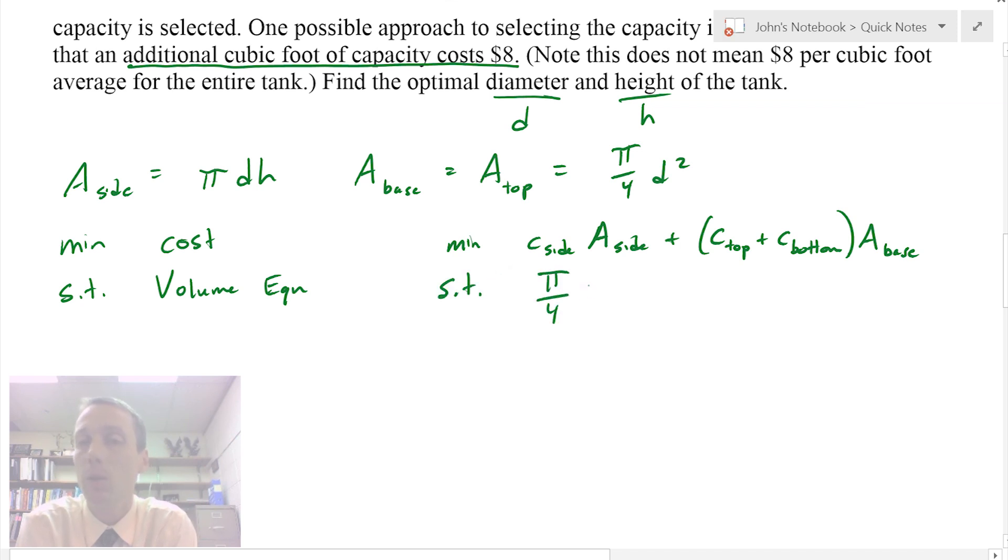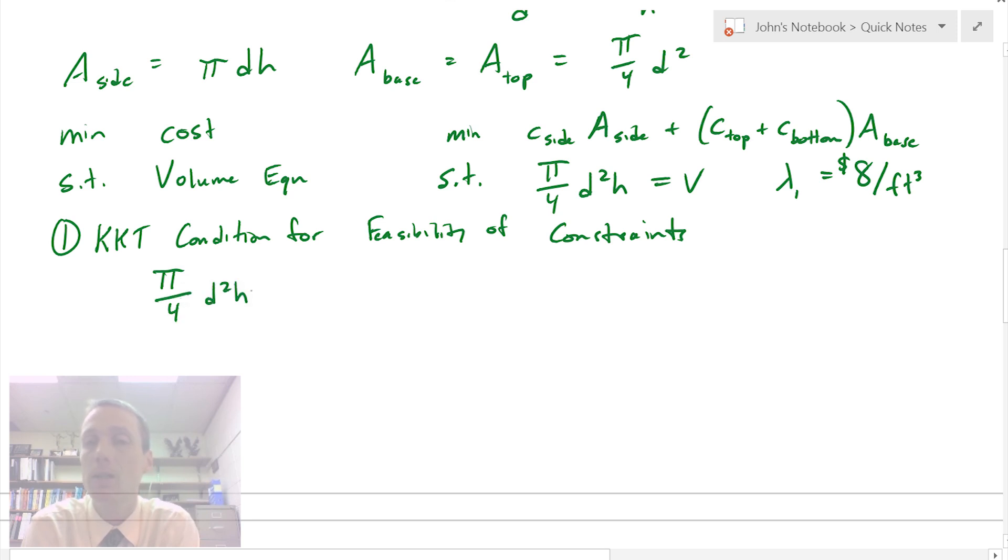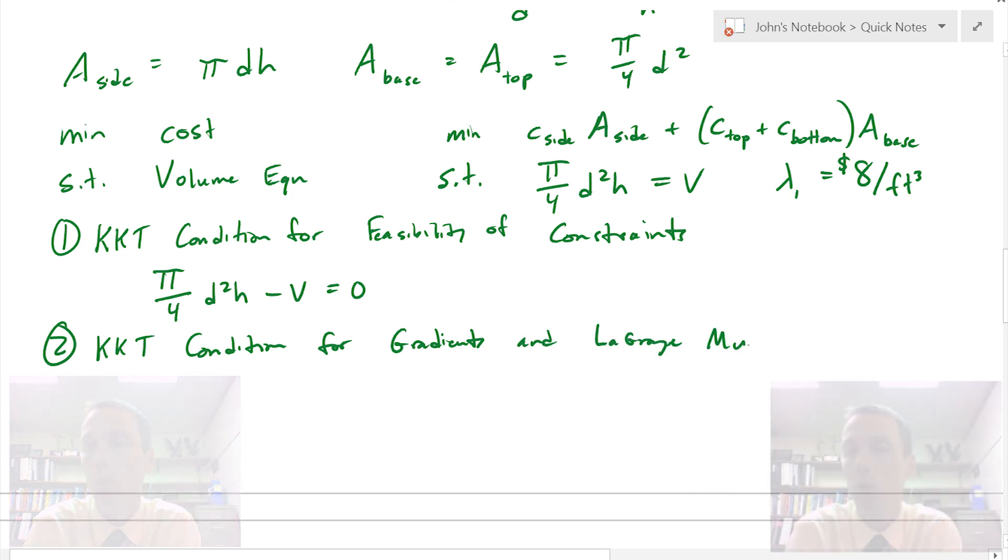Subject to the volume equation: the volume of our tank is pi over 4 times d squared times h. We also have a Lagrange multiplier of $8 per cubic foot that we want at our final solution. The first KKT condition is that the volume constraint must be satisfied at the optimal solution, so the combination of height and diameter must equal a volume. Then we have KKT condition number 2 for the gradients of the Lagrange multiplier.